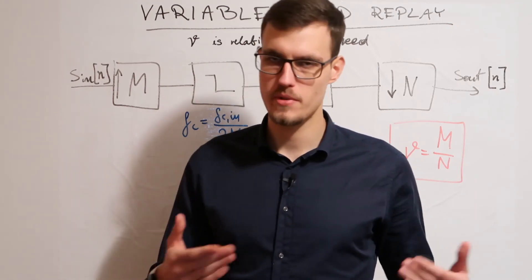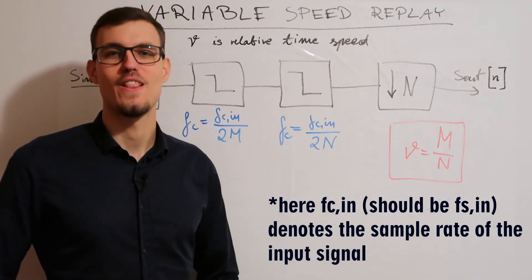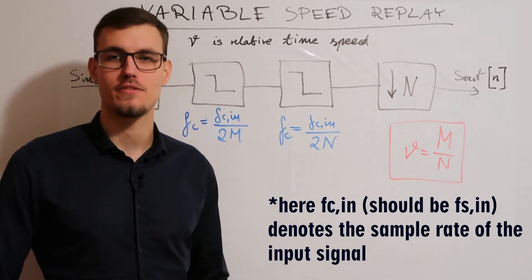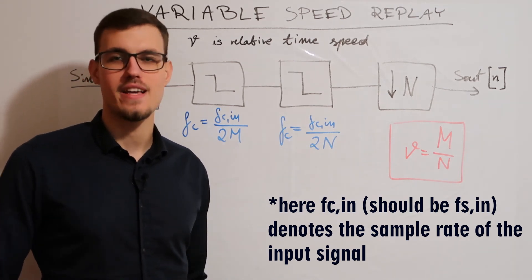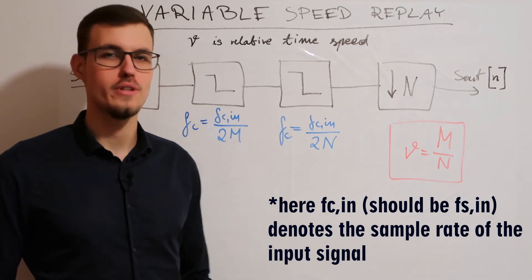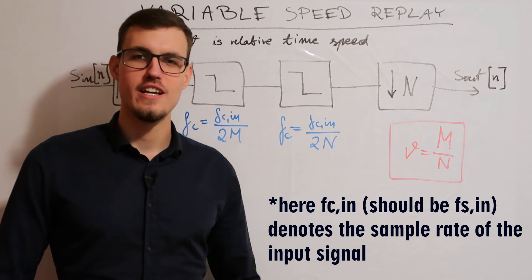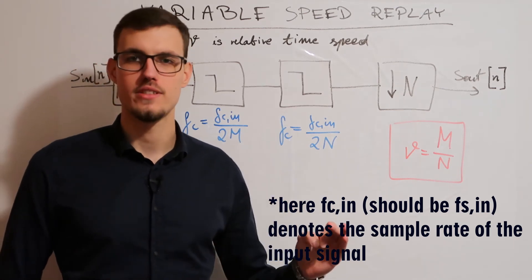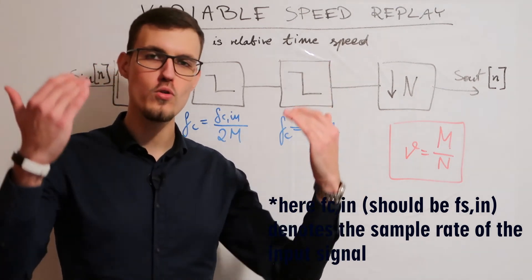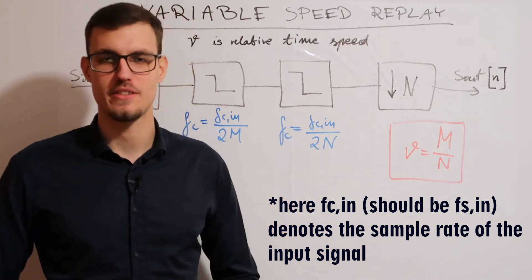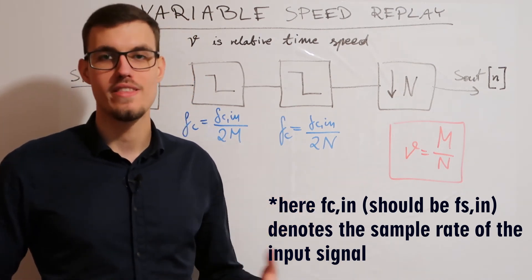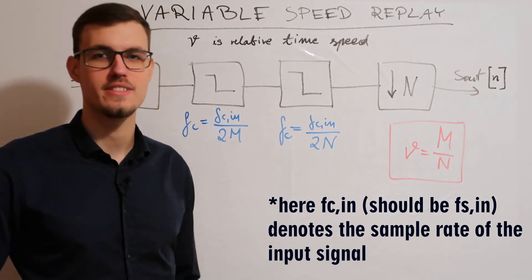So we don't have to do it beforehand. The first low-pass filter has its cutoff frequency set at Fs in over 2M to remove the repeated spectra components that were pooled from beyond the Nyquist frequency.